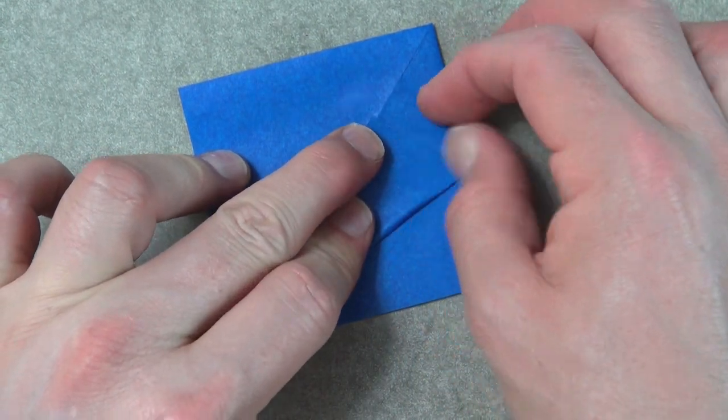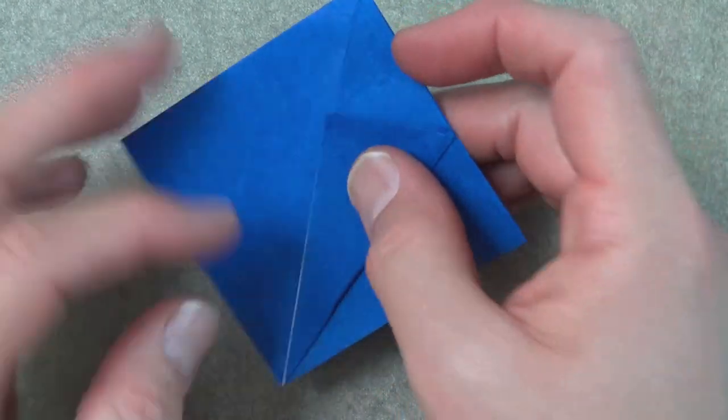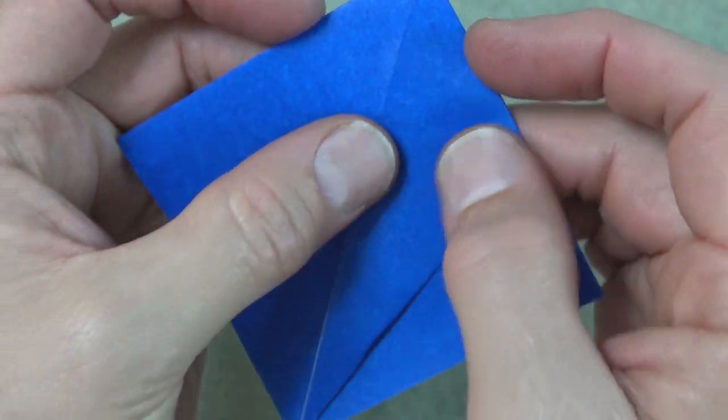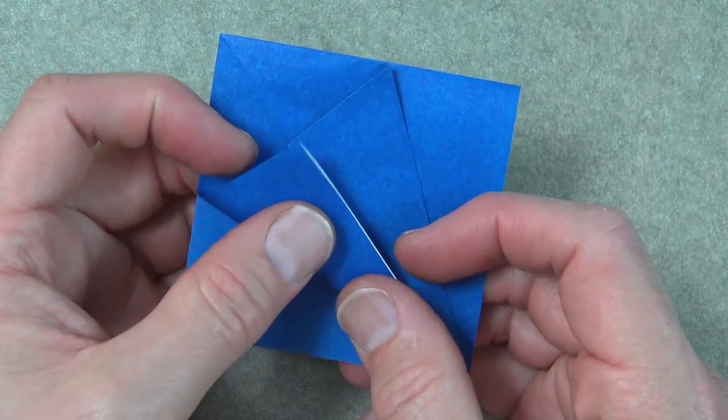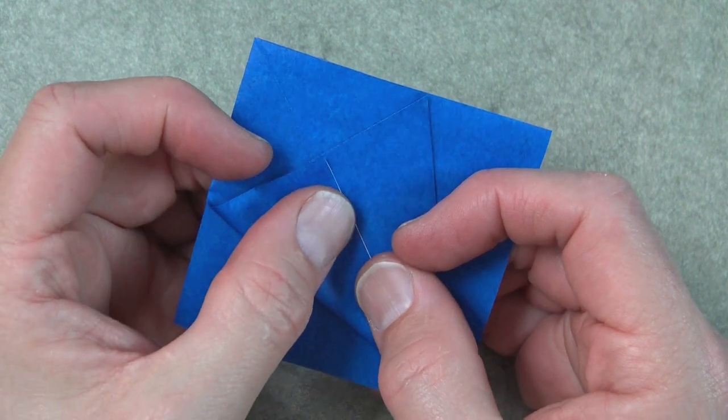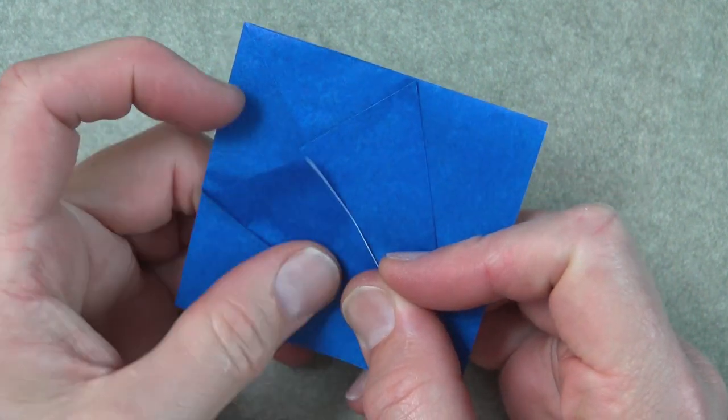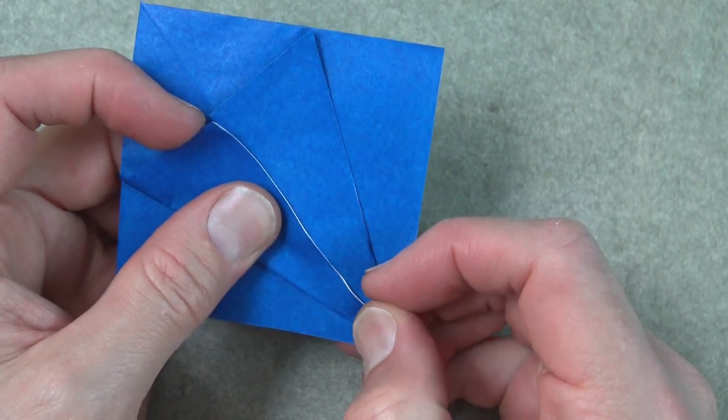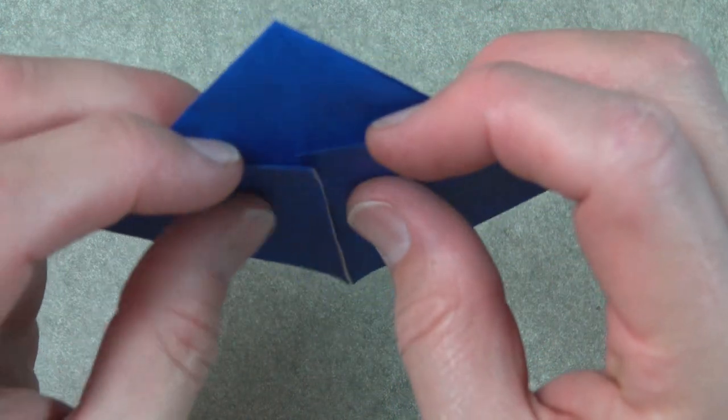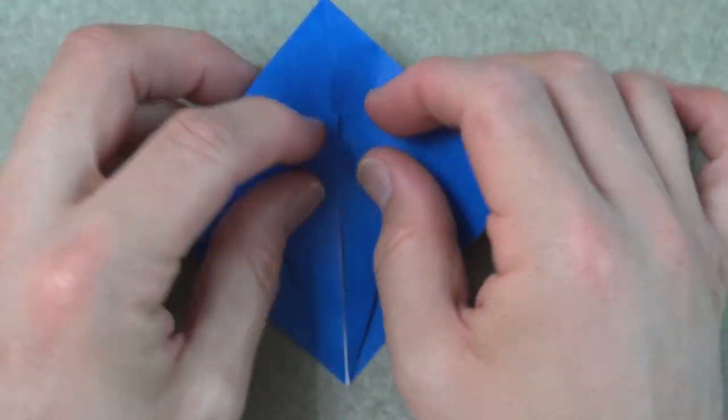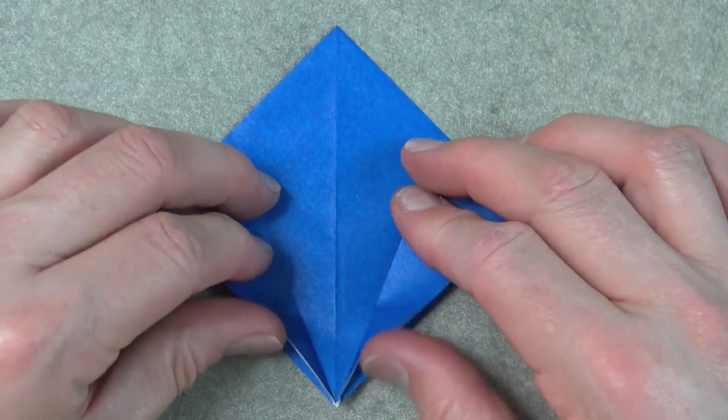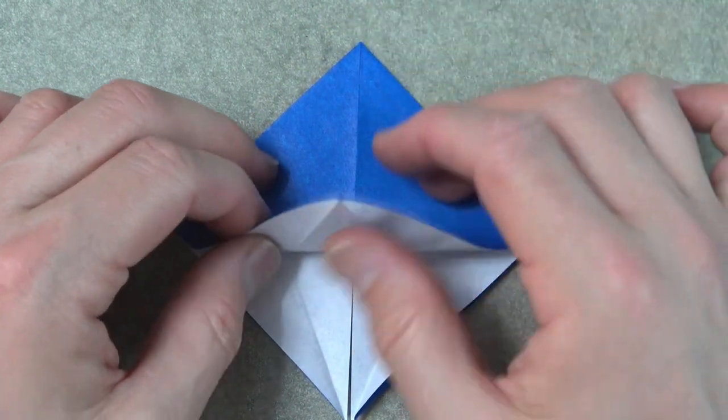I think I did too, okay. So it should look like that. And repeat on this side. So the two flaps should cross over each other by about two millimeters. And unfold the two flaps and fold the front flap to the top.